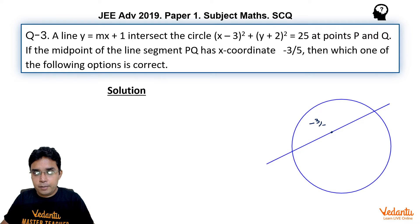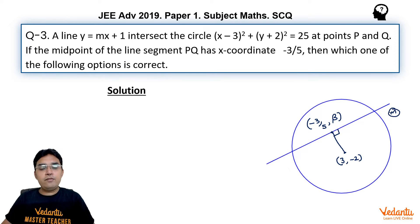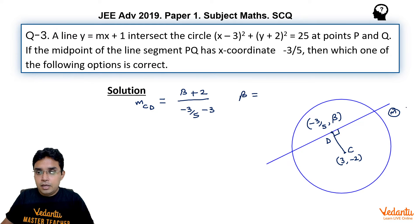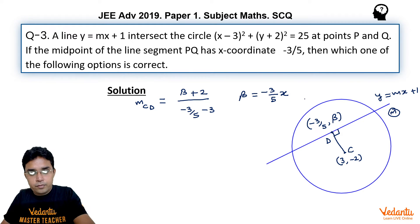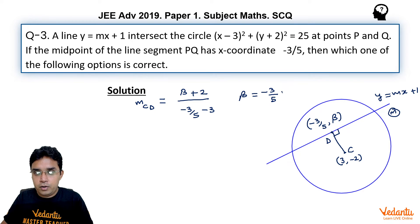Suppose this is midpoint minus 3 upon 5 comma beta. So if you join this midpoint to the center of the circle which is (3, minus 2), they should meet at 90 degrees. Already we know the slope of this given line which is m. Let us call this midpoint as D and this center as C. So the slope of line joining CD can also be found by (y₂ minus y₁) upon (x₂ minus x₁). So it would be (beta plus 2) upon (minus 3 upon 5 minus 3). Here beta is because this equation of line is y equals mx plus 1 and we know the x-coordinate, it would be minus 3 upon 5 into m plus 1.